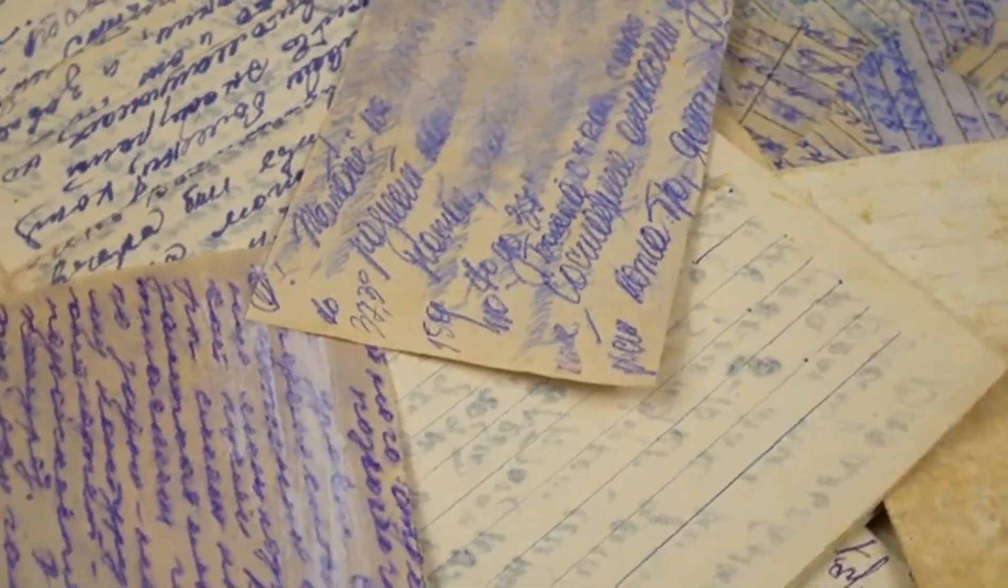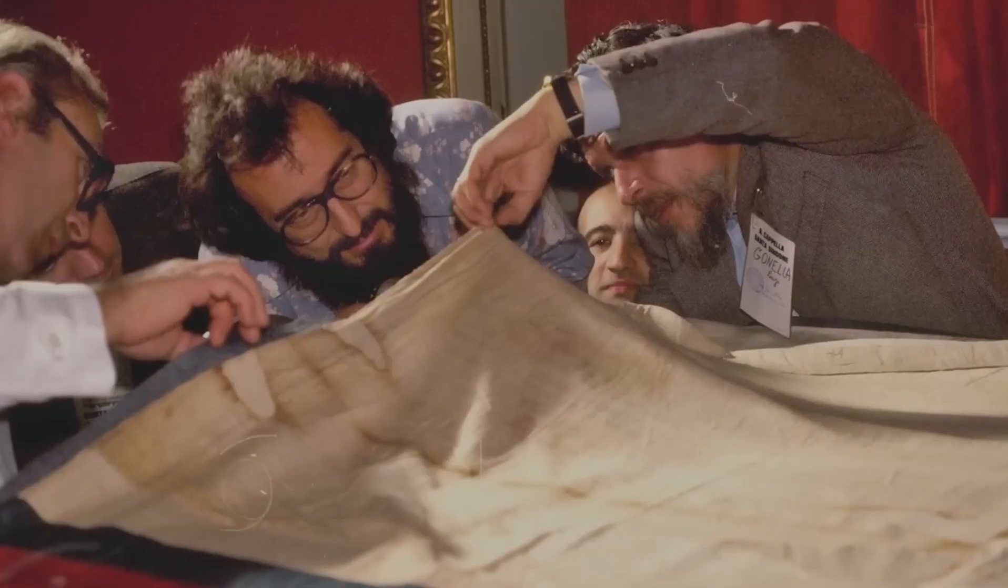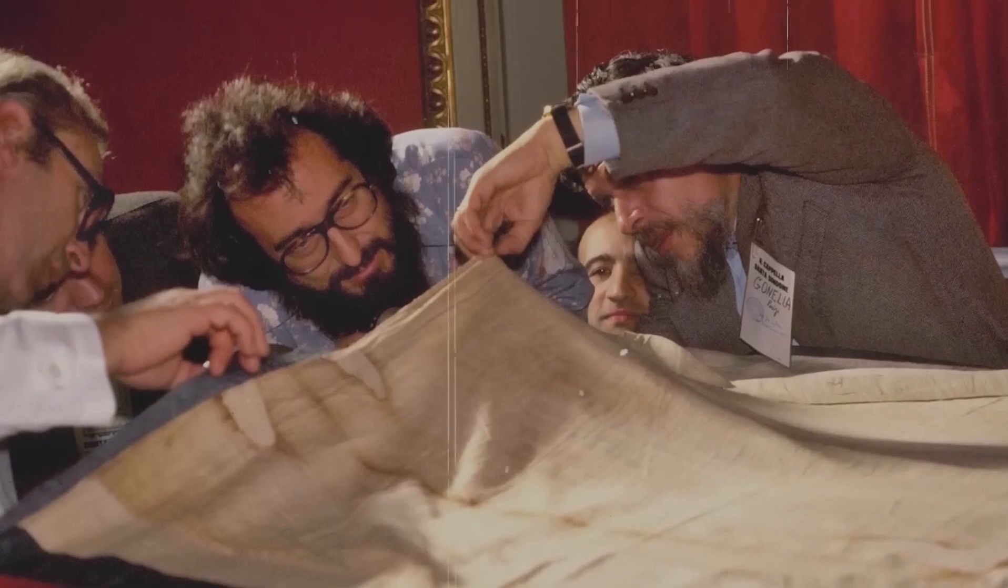But here's what makes this even more mind-blowing. The bloodstains on the Shroud were there first, right after Jesus was wrapped in it. The image appeared later but in perfect alignment with the wounds on his head, body, back, arms, and legs. The blood pooled exactly as expected for a body that had been lying in a tomb for a few hours.